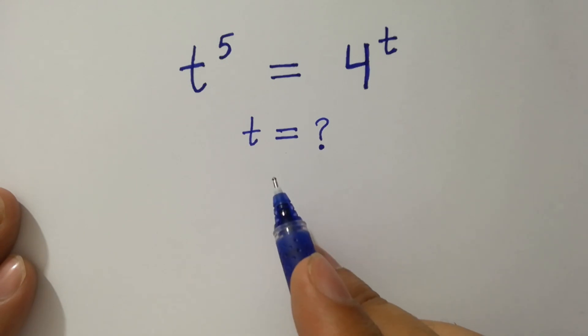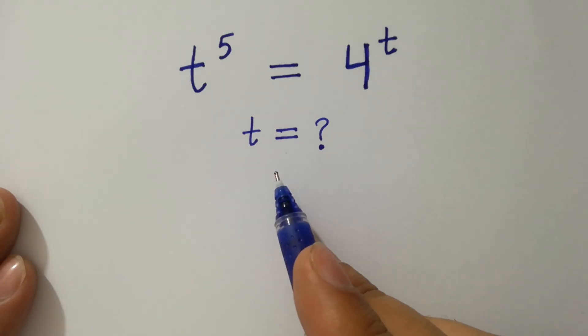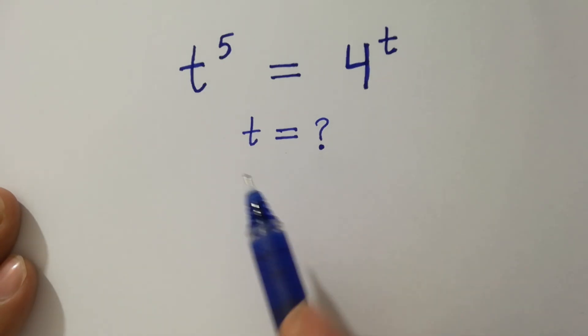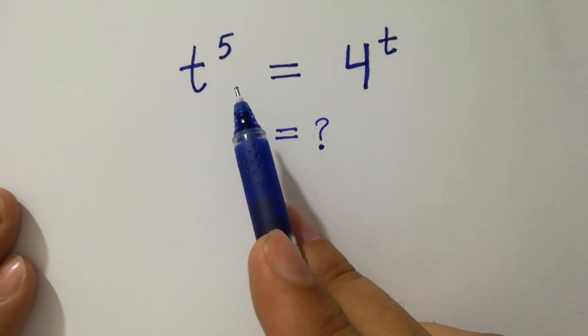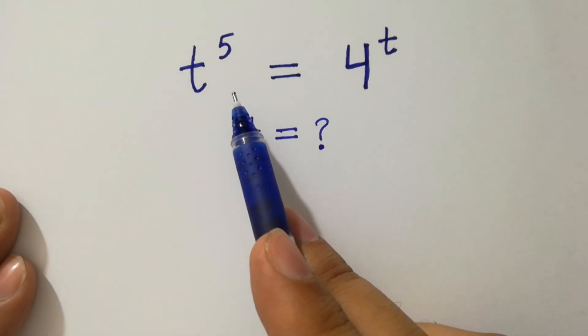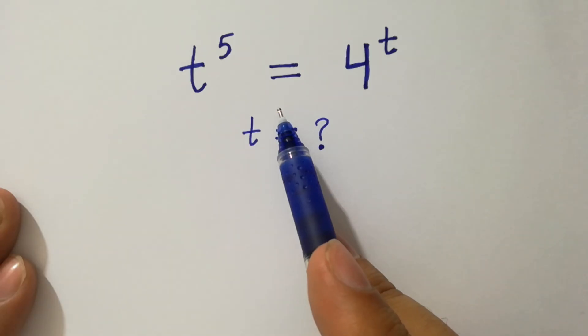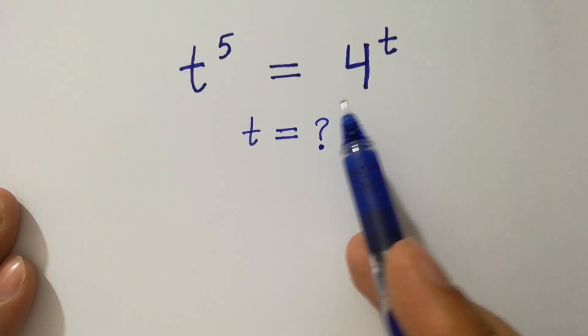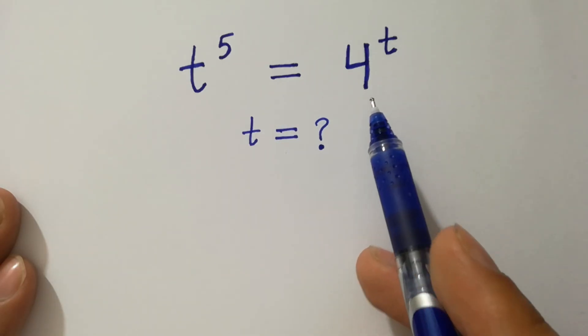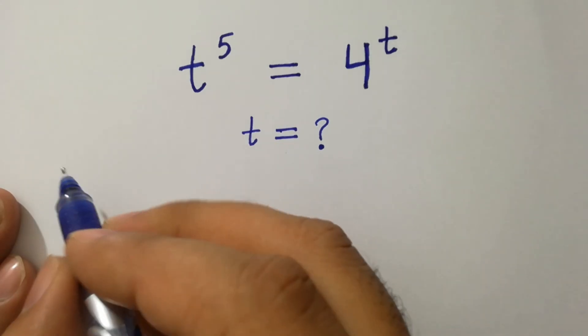Hello friends. Find the value of t if t to the power 5 equals 4 to the power t. Let's have a solution.